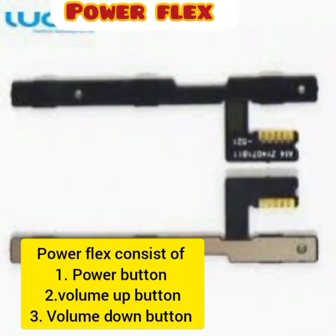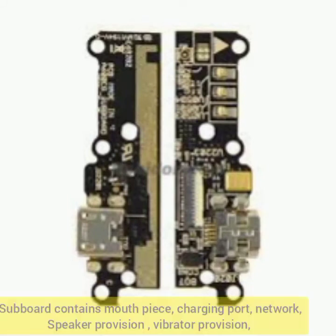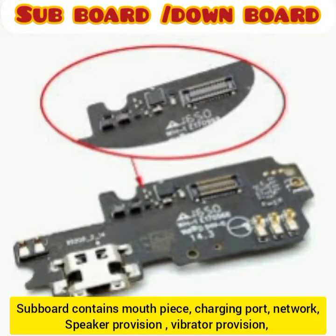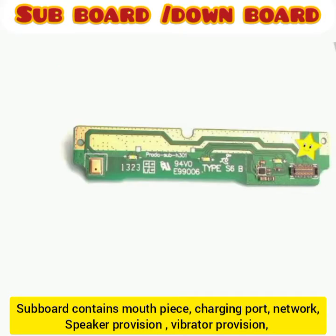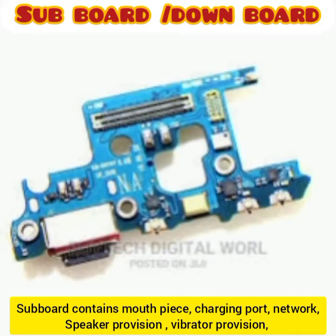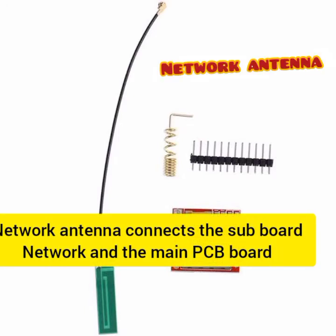Next we have the sub-board, also called the down board or down flex. It comprises the charging port, mouthpiece, network antenna, and vibrator. In most phones, when the down board is faulty or a component like the mouthpiece or vibrator is faulty, it is advisable to change the entire sub-board. It has provisions for where the mouthpiece and network antenna are connected.